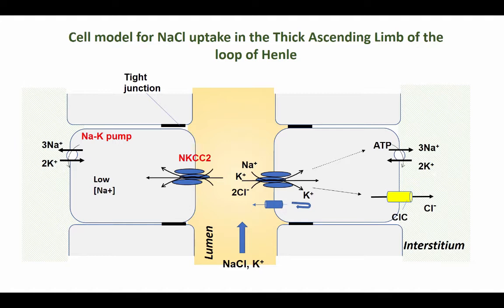Potassium is going to be recycled through a channel in the apical membrane, which is referred to as the ROMK channel. This is a very important process for potassium, because it is the recycling of potassium that's going to keep the sodium-potassium-2-chloride co-transporter active.